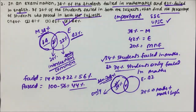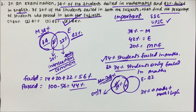So option 4, 44 percent, is the correct answer. One important concept was involved here regarding how to interpret Venn diagram regions correctly. I hope you understood the question, the solution, and the trick associated with it. Thanks a lot for watching the video.